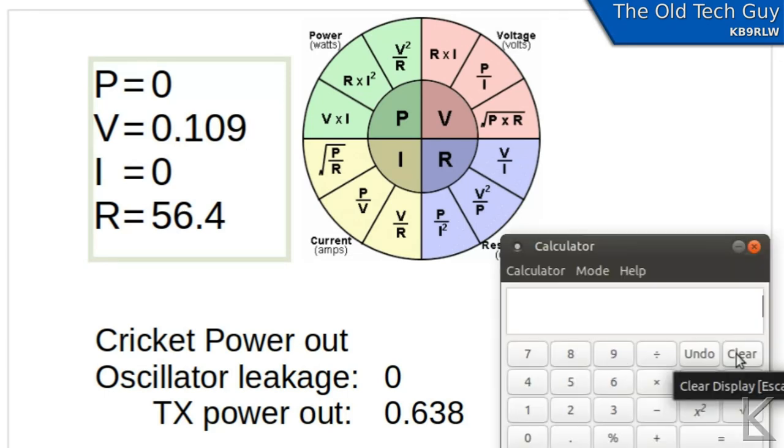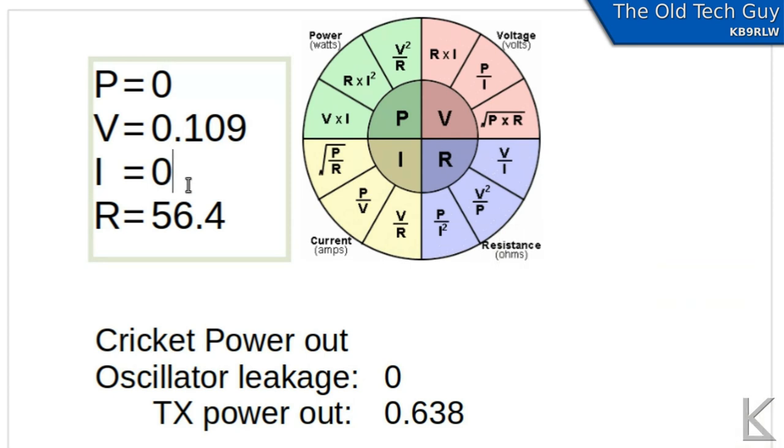Now let's calculate power. Remember we can calculate the missing two values if we have two values. So I can calculate current and then once I've calculated current I can then calculate the power. So we want to calculate current. Voltage divided by resistance is the formula that we'll use. So we'll take 0.109 divided by 56.4 gives us a current of 1.9 milliamps. So I guess I'll round that up to 2 milliamps. So our current is 0.002. All right so that's our current.